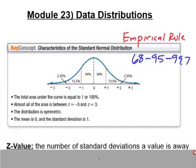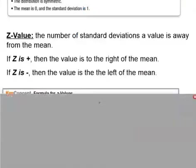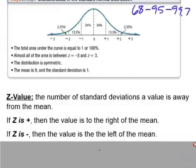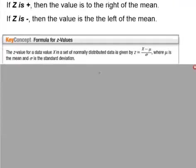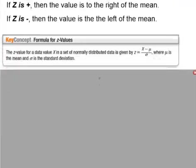The z-value is a more precise measurement of standard deviation. We'll learn how to calculate a z-score using a z-table. Instead of being exactly one standard deviation above the mean, you could be 1.57 — you can figure out where each individual data point falls relative to the mean. A positive z-value means you're above the mean; a negative z-value means you're below the mean.